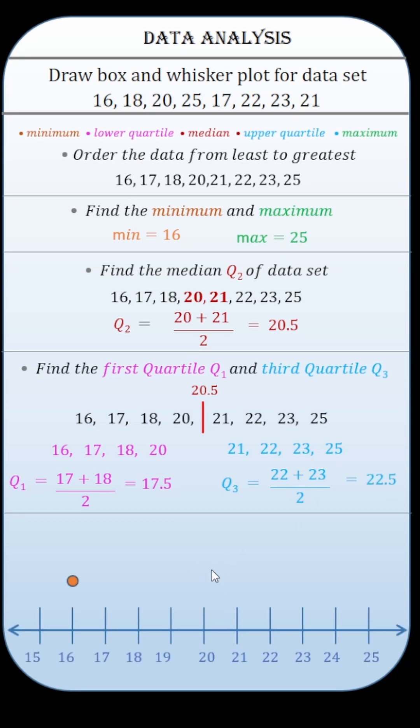Draw a number line. Plot 5 number summary above the number line. Draw a box around the first and third quartile and draw a vertical line to show the median and draw whiskers from the box to minimum and maximum values.